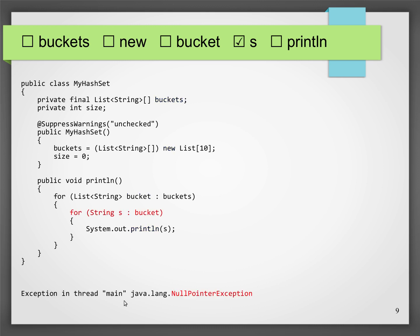The problem is that we're trying to iterate over a null reference. This for-each loop iterates over this array, but there are no lists in the array — there are only null references. If you say you want an array of length 10 with element type list, all you're going to get is 10 null references. Java won't create lists for you; if you want lists, you have to create them yourself. So here we pick the first null reference from the 10 null references and then we can't iterate over that — we have to create the lists.